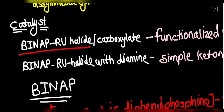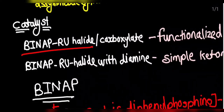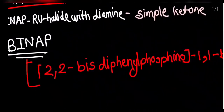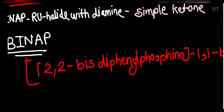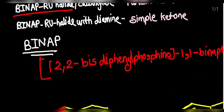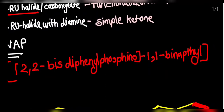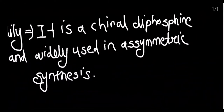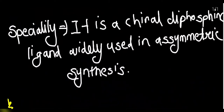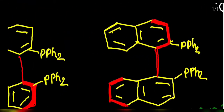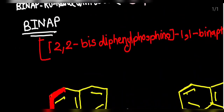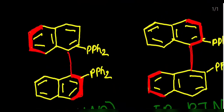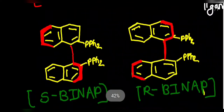What is BINAP? The BINAP, if we see the name of this catalyst, it is 2,2'-bis(diphenylphosphino)-1,1'-binaphthyl. This is one of the chiral diphosphine ligands which is used widely for asymmetric synthesis. After seeing the name of this ligand, we will see the structure. This is how the BINAP ligand looks.